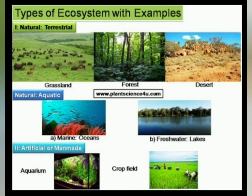In a natural ecosystem you will find terrestrial and aquatic types. For terrestrial, examples include grassland ecosystem, forest ecosystem, and desert ecosystem.